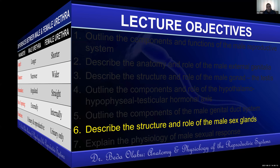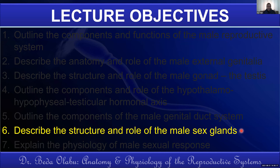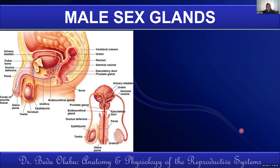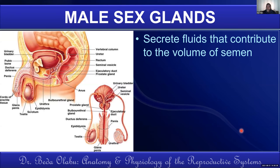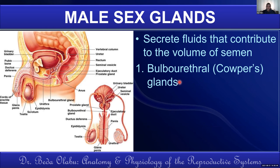The male sex glands are the organs that produce semen and contribute to its overall volume. The bulbourethral glands, also called Cowper's glands, are tiny glands that open at the junction between the membranous urethra and the bulbar urethra. They produce a lubricant during sexual intercourse to lubricate the urethra.